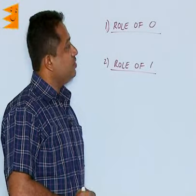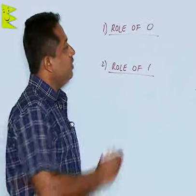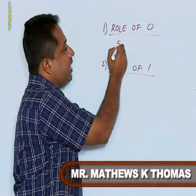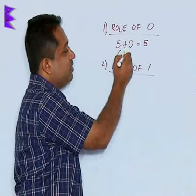Now, let us understand the role of 0 and the role of 1. If you see 0 and you add it to any number, we find that 5 plus 0 will give us 5, 6 plus 0 will give us 6.